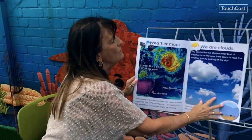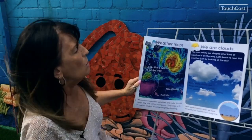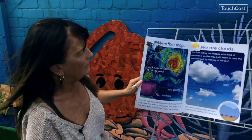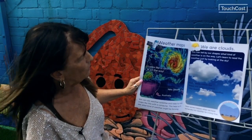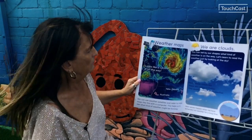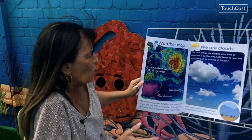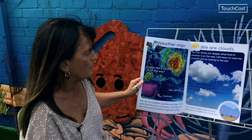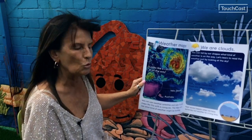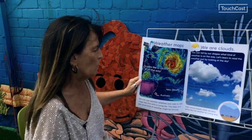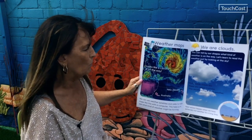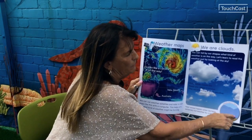We are all clouds. You can tell by our shapes what kind of weather is on the way. Let's learn to read the weather just by looking up at the sky. Puffy white clouds are called cumulus — this usually means good weather.